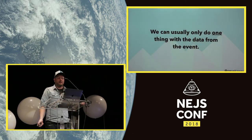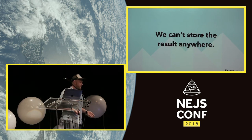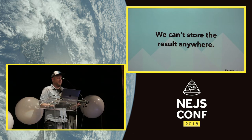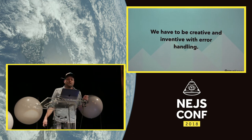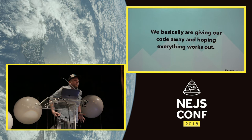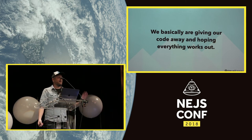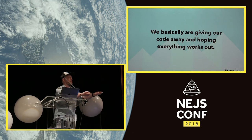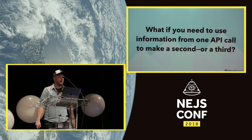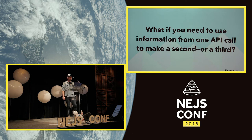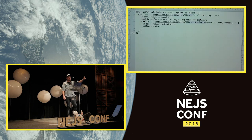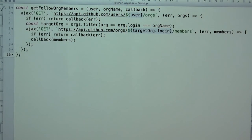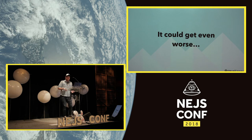Callbacks have problems. You can usually only do one thing with that data — once the function has run to completion, those variables are out of scope. You can't easily store results. Error handling gets creative. You're putting a function onto the event queue and saying 'whenever that comes back, call this' — but whoever you handed that function to could call it six times. And there's the pyramid of doom: if you need data from the first request to make the second, your code keeps indenting further and further to the right.